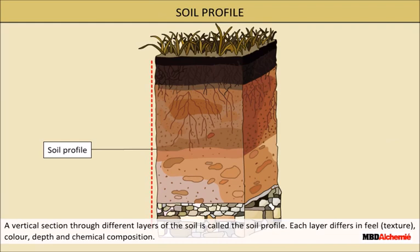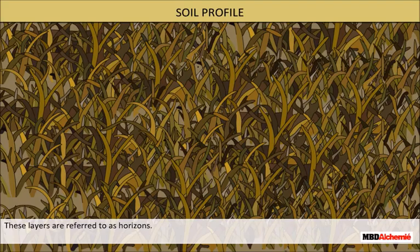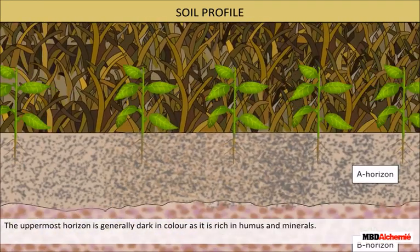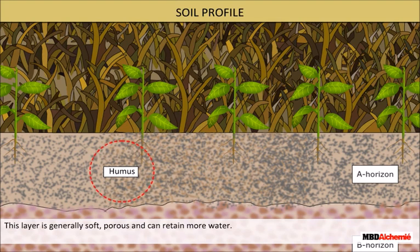A vertical section through different layers of the soil is called the soil profile. Each layer differs in texture, color, depth and chemical composition. These layers are referred to as horizons. The uppermost layer is generally dark in color as it is rich in humus and minerals. It is humus that makes the soil fertile and provides nutrients for growth. This layer is generally soft, porous and can retain a lot of water. It is called the topsoil or the A horizon.